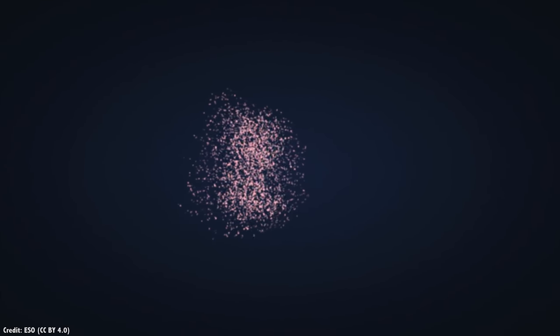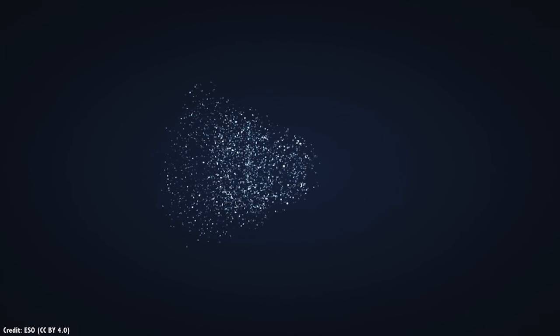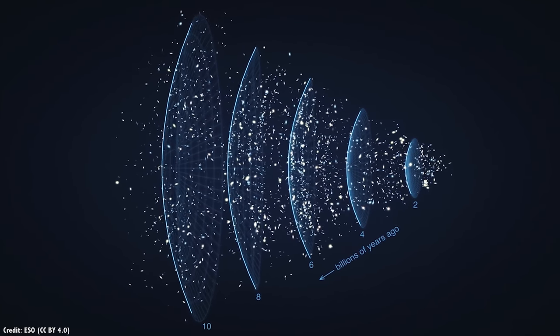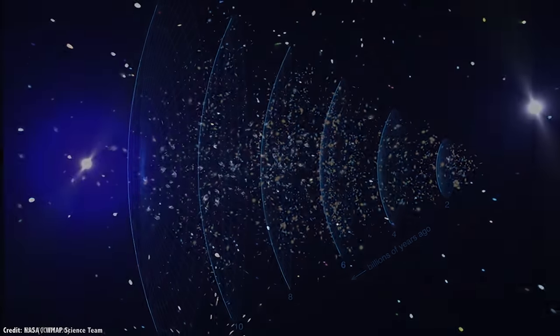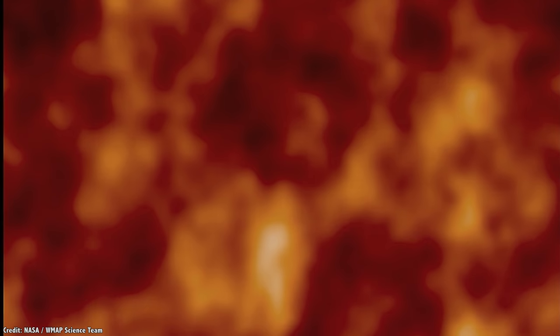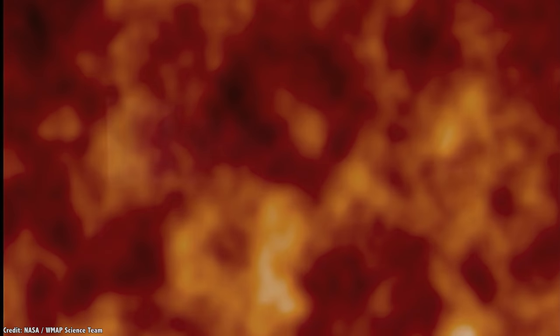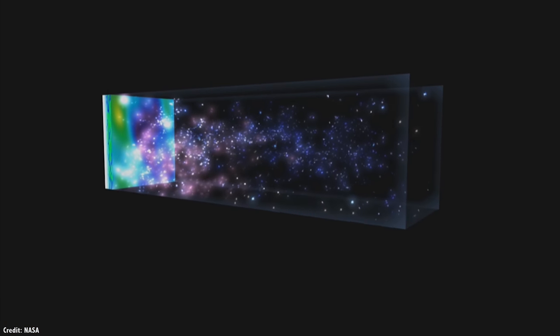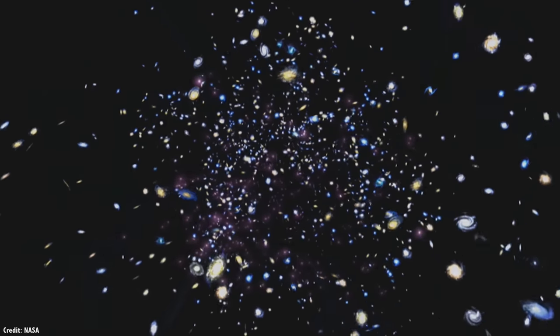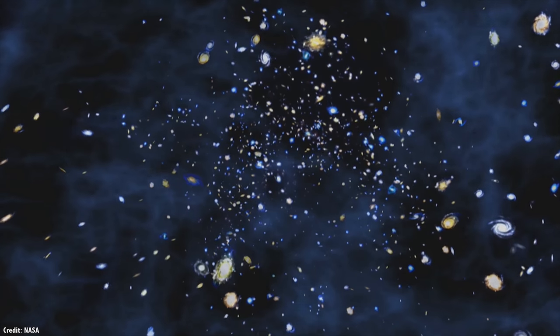Our view to the Universe is a time machine. The farther we look out into space, the further we're looking back in time. Our most sensitive telescopes like Planck and WMAP have taken us to the Cosmic Microwave Background Radiation, a time when the Universe had cooled down just enough for light to be able to escape into space, just 300,000 years after the Big Bang.